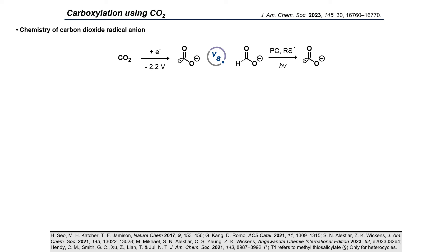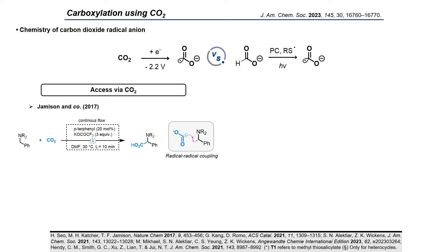In contrast to the numerous carboxylation methodologies developed using carbon dioxide as an electrophilic partner, the use of the carbon dioxide radical anion has only recently gained in popularity. Indeed, in 2017, Jamison published seminal work in which they accessed the radical anion from carbon dioxide using a photocatalytic system under UV radiation.